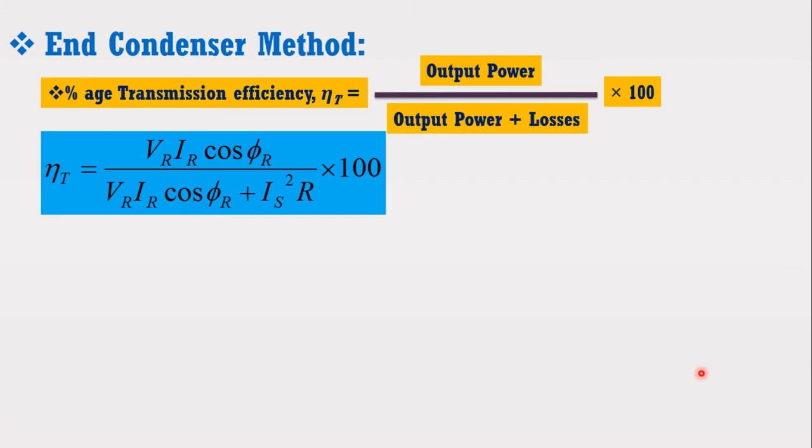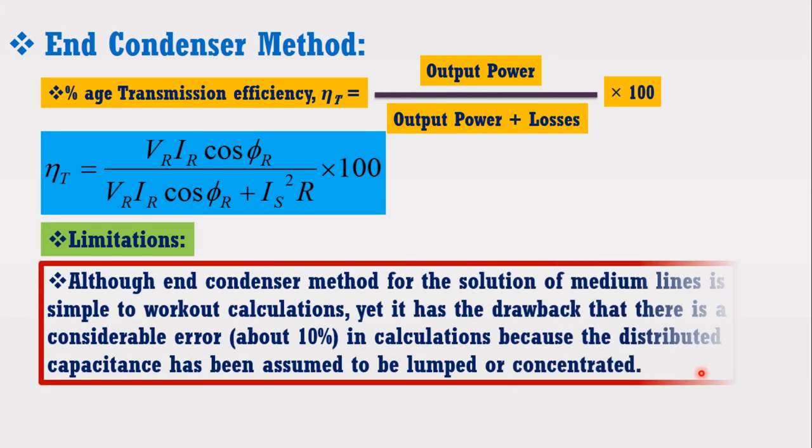Now, I am going to discuss the limitation of this method. Although end condenser method for the solution of medium line is simple to work out calculation, yet it has the drawback that there is a considerable error of about 10% in calculation, because the distributed capacitance has been assumed to be lumped or concentrated.